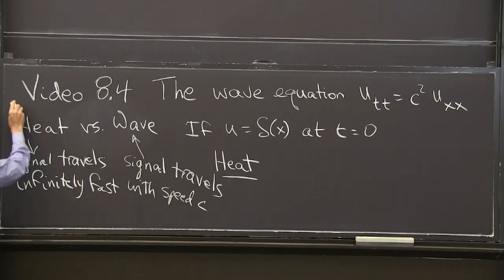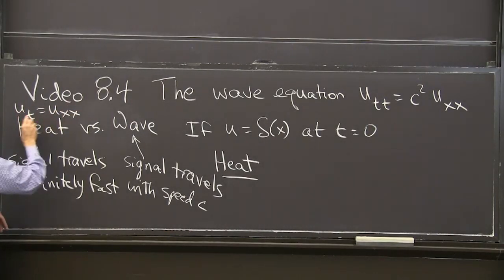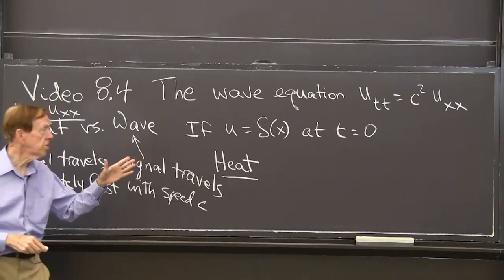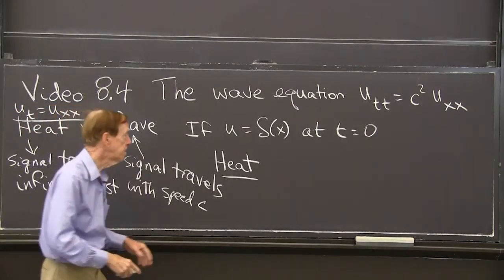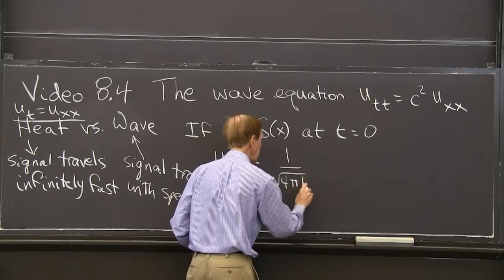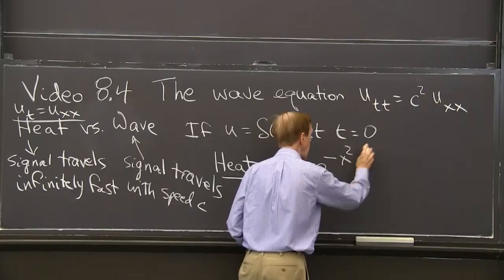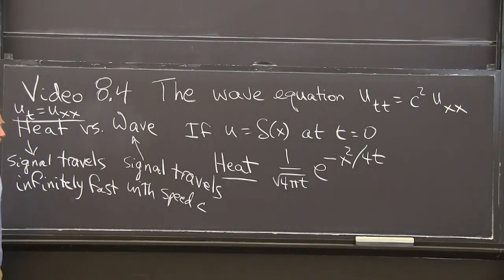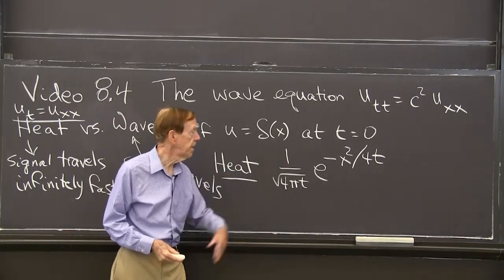Remember, the heat equation is du/dt equal uxx, first derivative in time. And the solution that starts from the delta function, I think there's a 1 over, there's a square root of 4πt. There's an e to the minus x² over 4t. I think perhaps that's it.